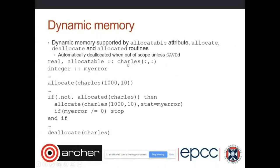To use allocatable variables, you declare them with the `allocatable` attribute, then before using them call `allocate` with the variable name and the dimensions. You can also use the `allocated` function to check whether a variable has already been allocated before proceeding. It's good practice to manually deallocate variables when done, though Fortran will handle it automatically if you forget.